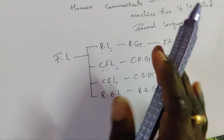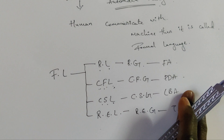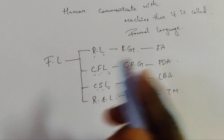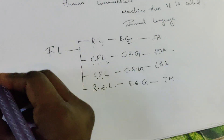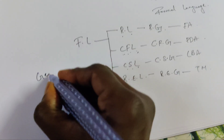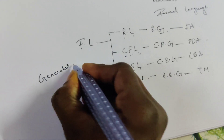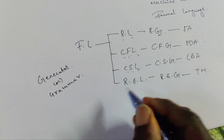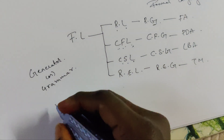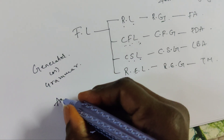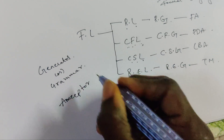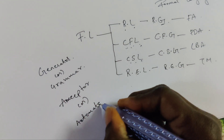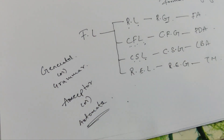These are all the things we come across in FLAT. Here, G means generator or grammar. And A means acceptor or automata.